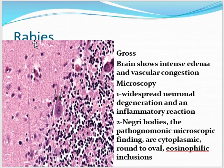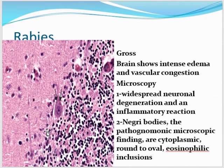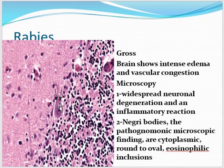Rabies is caused by a bite from an infected dog; the virus travels along peripheral nerves to reach the CNS. The brain shows edema and vascular congestion. Microscopically there is widespread neuronal degeneration and inflammatory reaction. Pathognomonic of rabies are Negri bodies — large cells containing cytoplasmic round-to-oval eosinophilic inclusions.